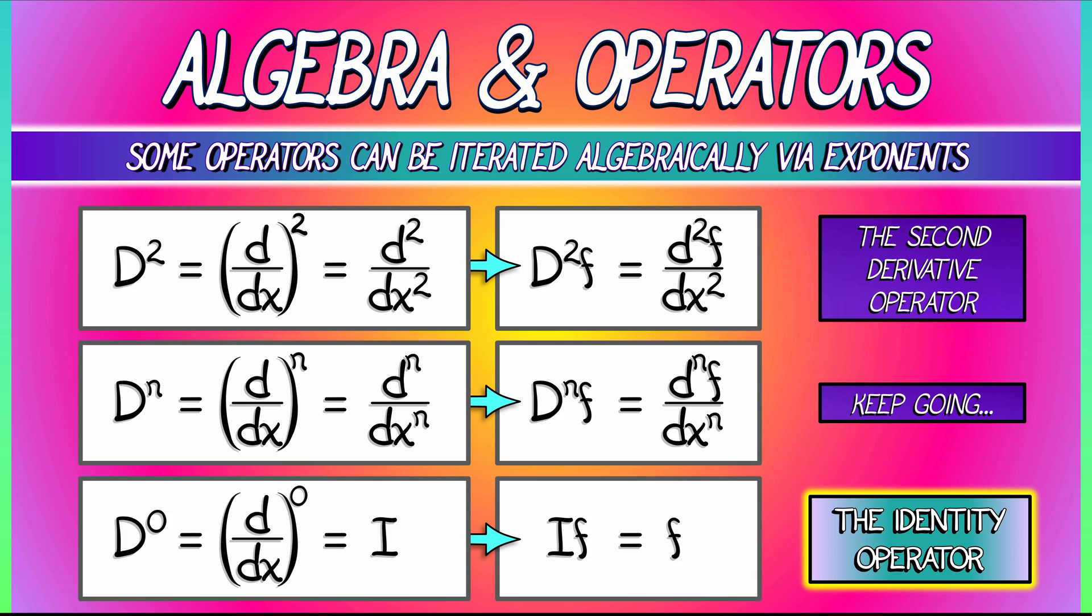Just like the number one under multiplication is an identity. You multiply something by one, you're not changing it. This is the operator version of that identity. Okay, so we've got powers of this differentiation operator capital D.